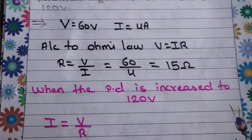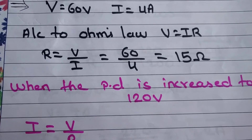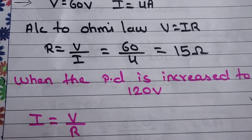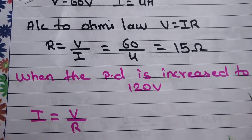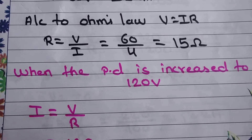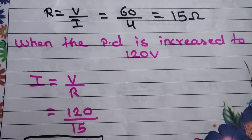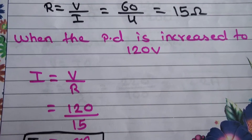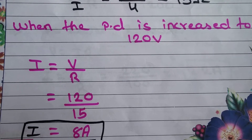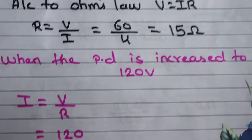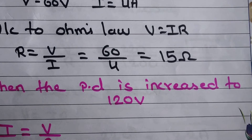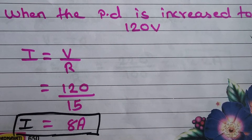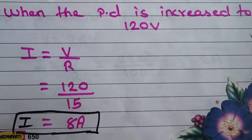When the potential difference is increased from 60 V to 120 V, we need to find the new current value. Using Ohm's law: I equals V upon R. V is now 120 V and R is 15 ohm. So 120 divided by 15 gives 8 ampere.